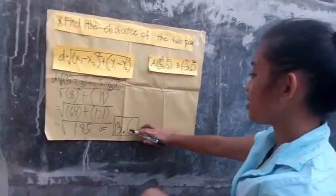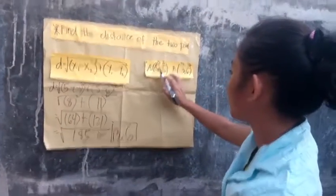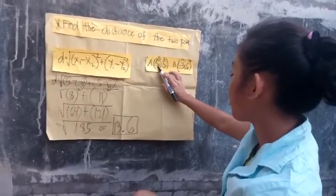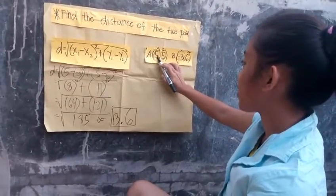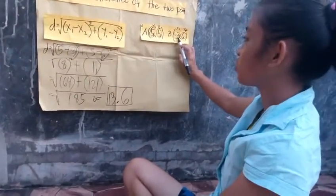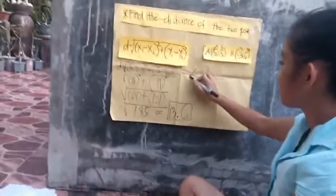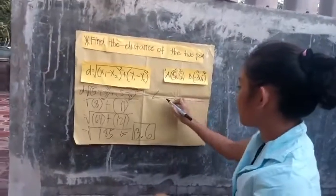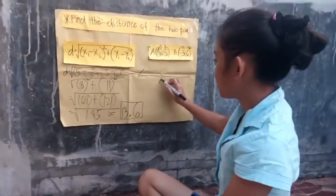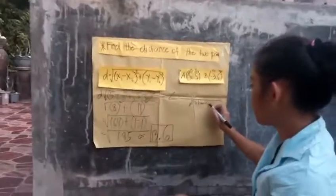So 13.6 is the distance between the two points, which are (5, 5) and (-3, 6). So 13.6 is the distance between the two points.